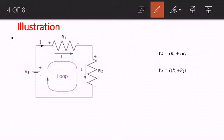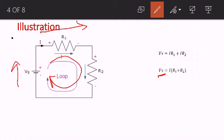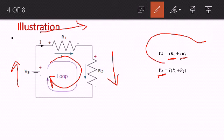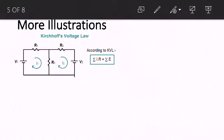Let's look at this particular circuit. We take our loop in the clockwise direction. You can see that for Vs, the direction of the loop is going from negative to positive, so Vs is definitely positive. Continuing in the direction of our loop, it is going in the same direction as the current, so IR1 is positive, and similarly IR2 is positive. That is why we have Vs equal to IR1 plus IR2. Since the current is common, we can say Vs equals I times R1 plus R2.